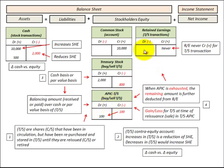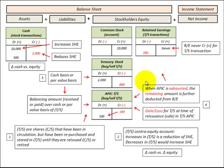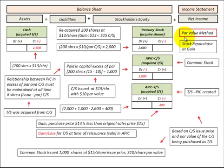If you need any extra debit amount beyond the existing credit balance in additional paid-in capital for Treasury stock, it would go to decrease or debit our retained earnings. You have to remember you can never credit or increase retained earnings for any Treasury stock transactions. Any gain or loss for our Treasury stock would be recorded at the reissuance or sale of the Treasury stock, done in the additional paid-in capital accounts and retained earnings if needed.